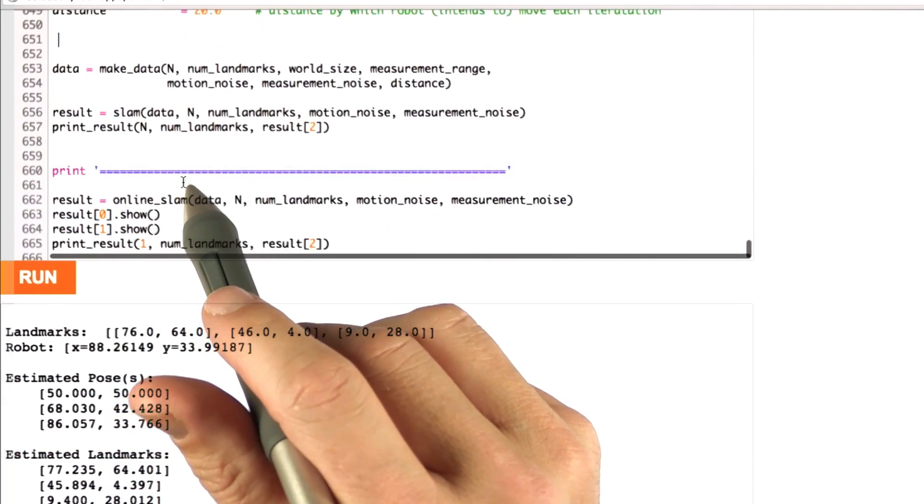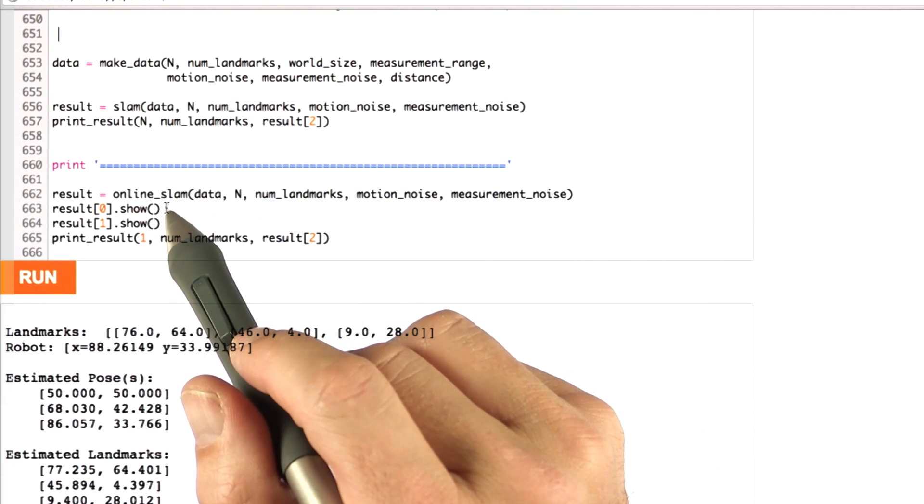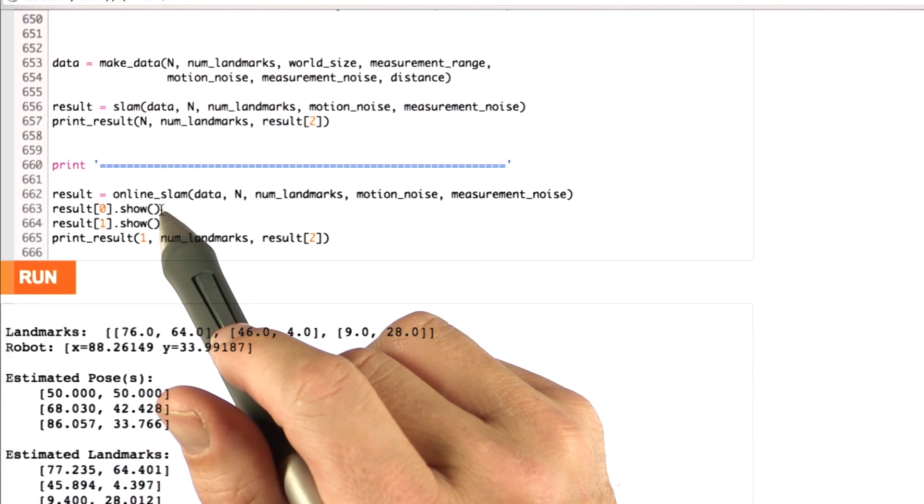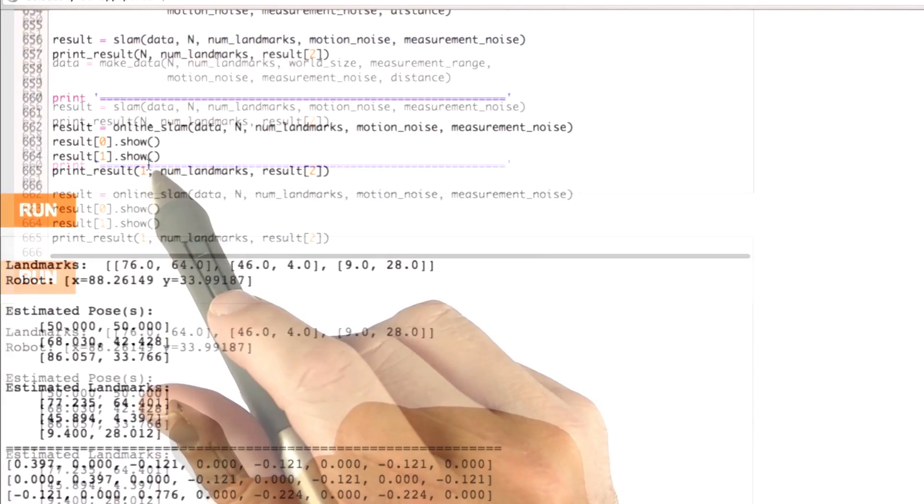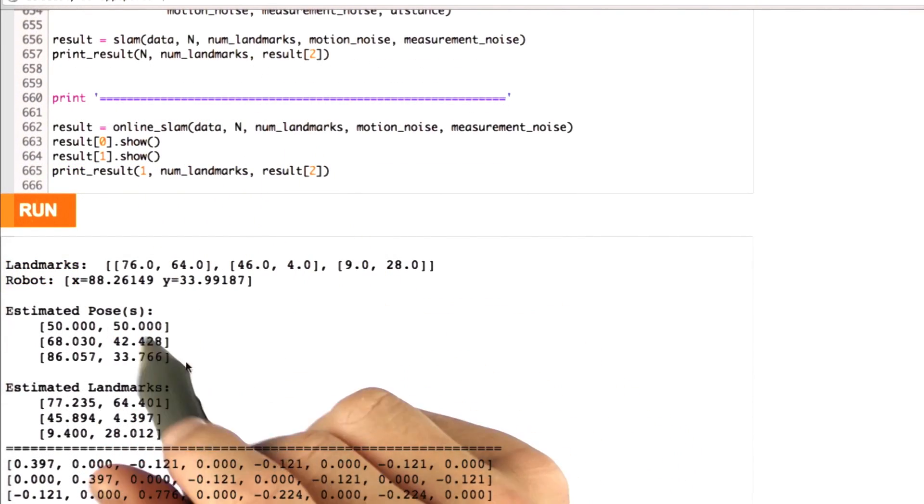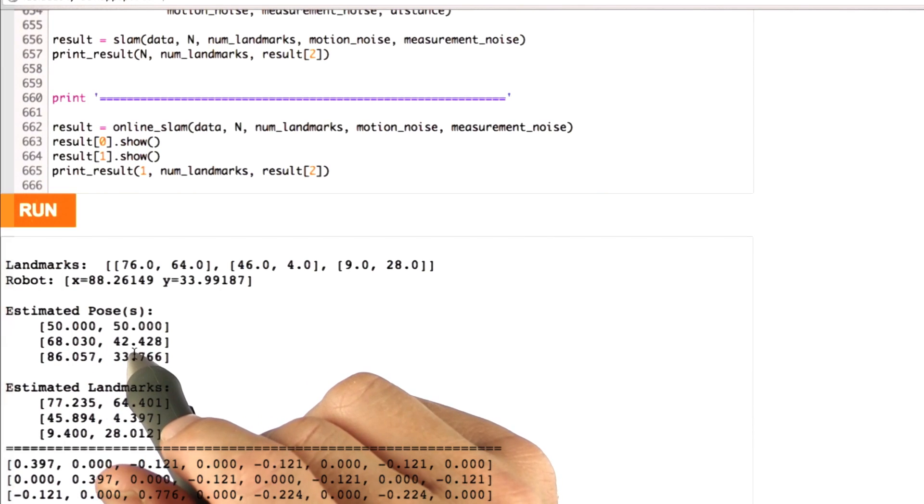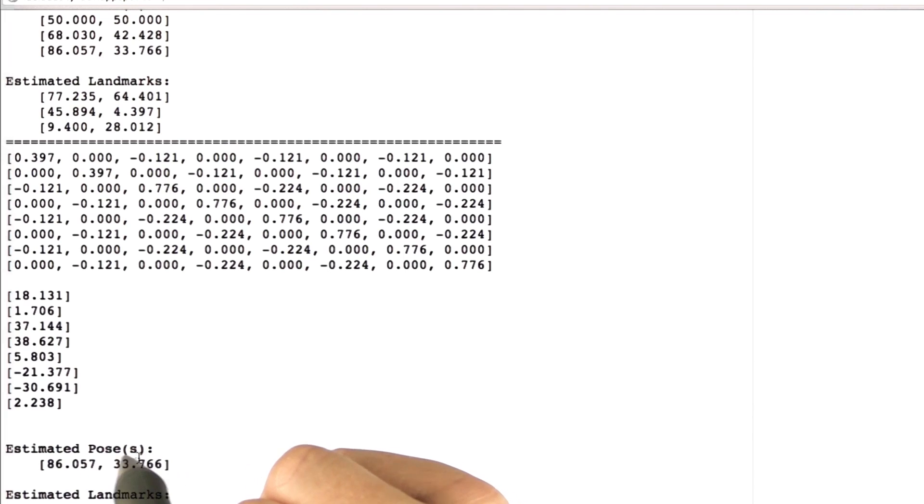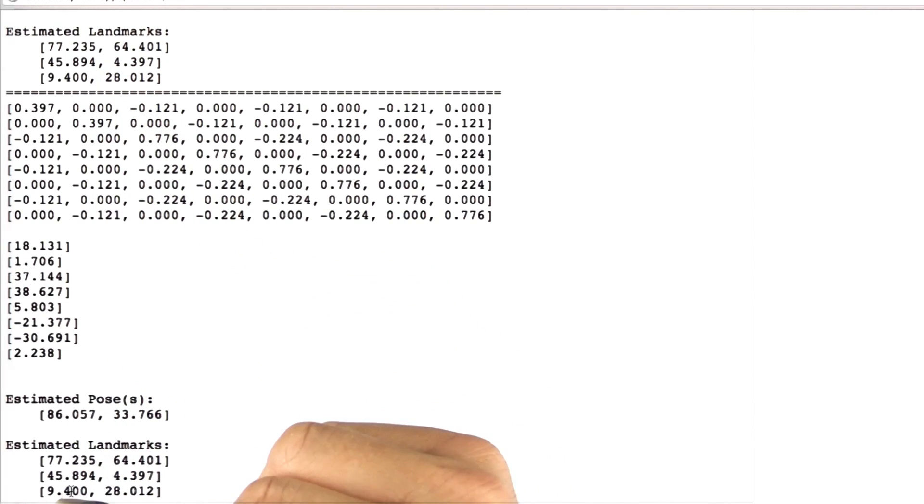Now, I also implemented, and that's your task now, a function called online slam. And that's exactly what I told you to do. It resizes the matrix every time a new motion occurs and then goes back to the original size. And I've printed out here as an example the information matrix omega and the vector of xi that I obtained. And I also printed out the final result. In the final result, we get exactly the same estimated pose as for the full slam algorithm, which is 86.0 and 38.7. So I go down. These are exactly the same number for the estimated pose. That's how you can verify this. The same is true for the estimated landmark.